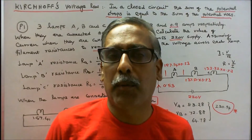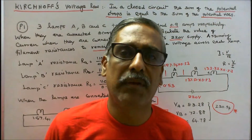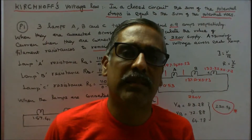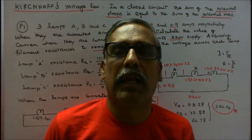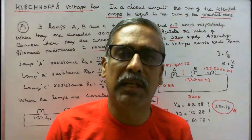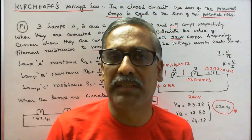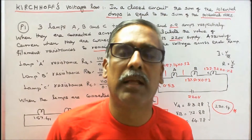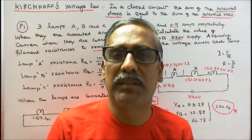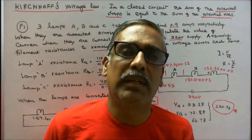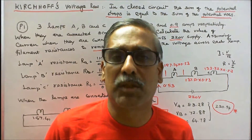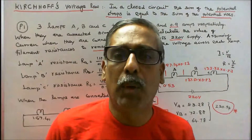This class we work out 5 problems on verification of Kirchhoff's Voltage Law. Kirchhoff's Voltage Law states that in a closed electrical circuit, the sum of the potential drops is equal to sum of the potential rises. Or, if an electrical circuit is energized by a source, the source voltage is equal to the sum of the voltage drop across each resistor. This is the statement of Kirchhoff's Voltage Law. Now we work out problems.